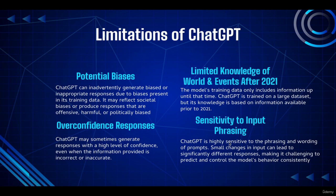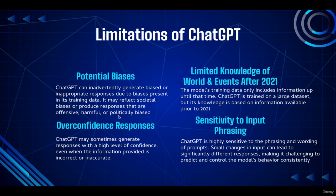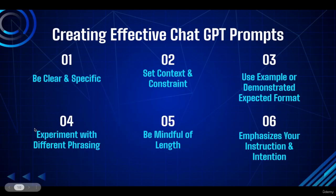The fourth limitation is sensitivity to input phrasing. ChatGPT is highly sensitive to the phrasing and wording of prompts — even small changes in input can lead to significantly different responses, making it challenging to predict and control the model's behavior consistently. That's the challenge we need to tackle, and that's why I believe prompt engineering is about designing prompts that are not only effective but also customizable, so that even with some modifications the output still reflects the original purpose.